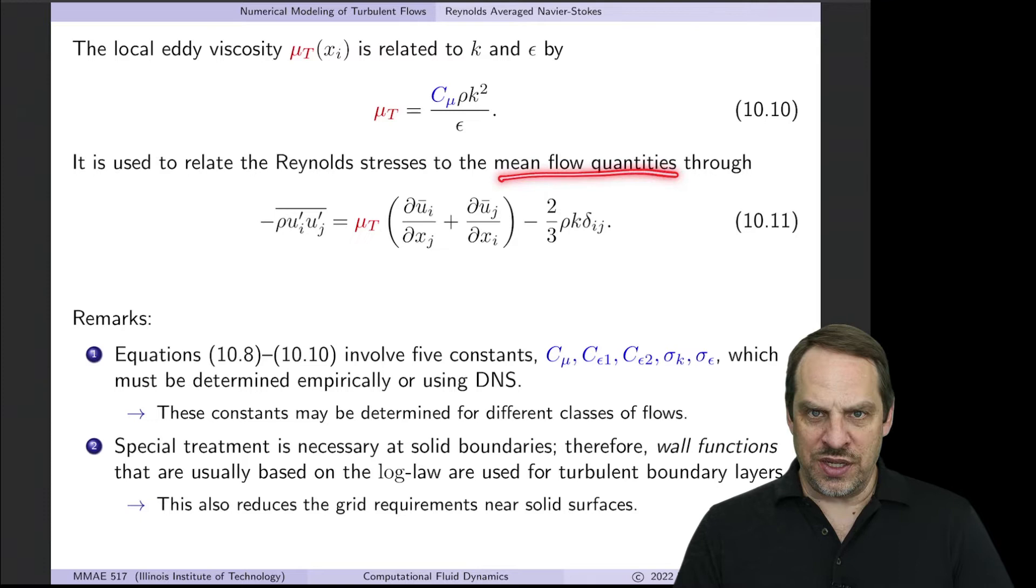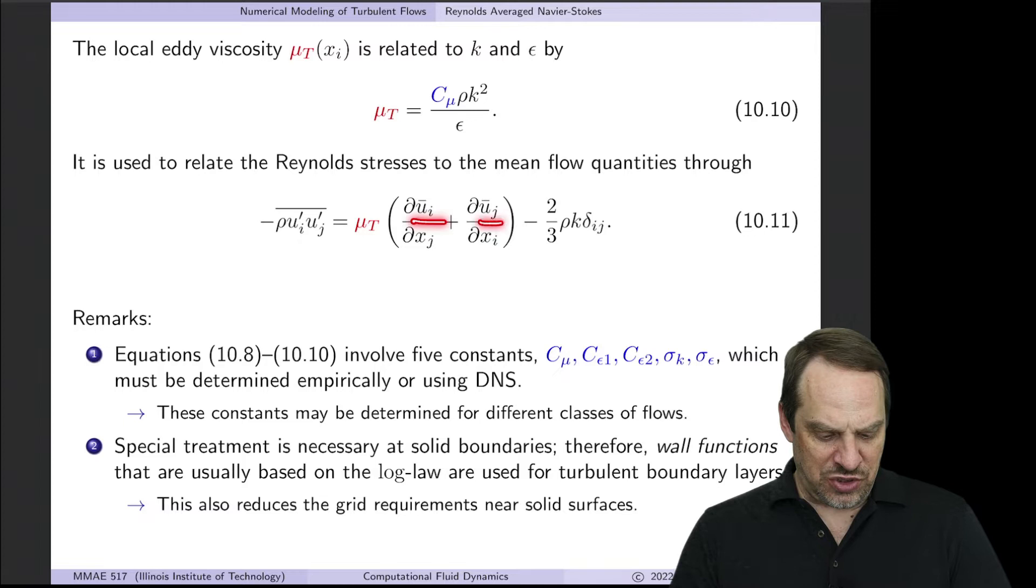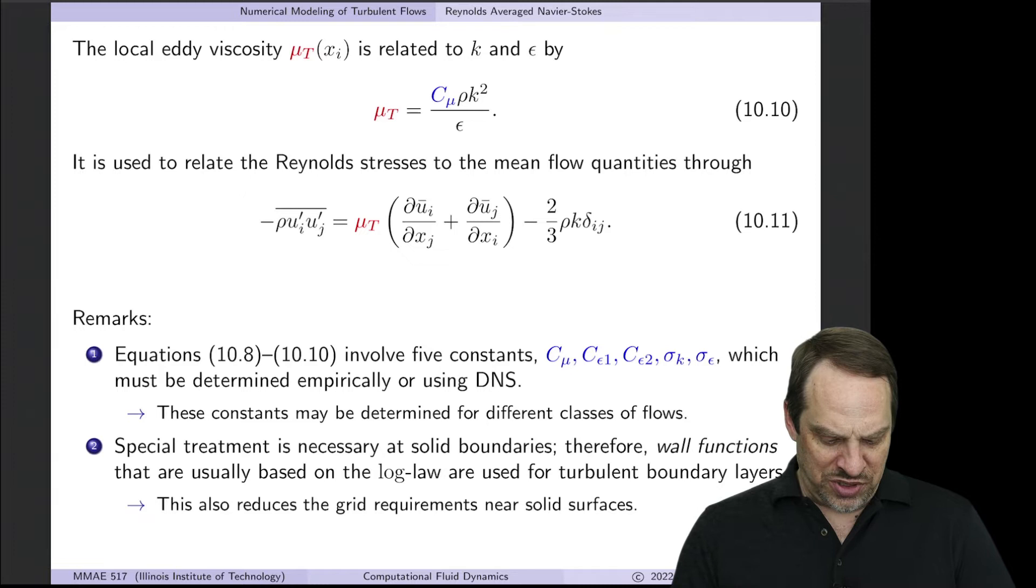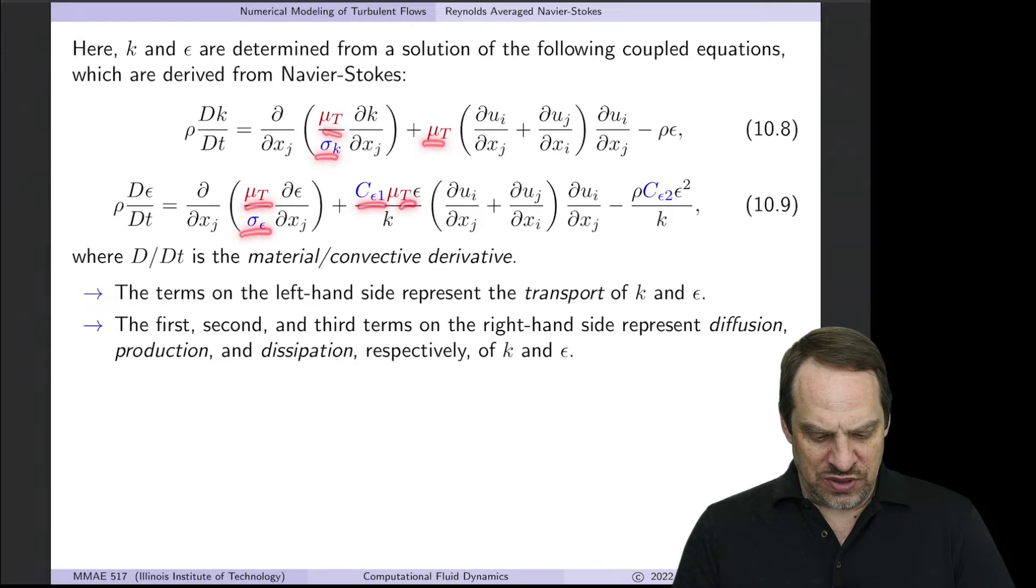Our Reynolds stresses are related to the mean flow quantities through this relationship. You see the u-primes here are being related to the u-primes on the right-hand side. What I want you to see are the five constants: c-mu, c-epsilon-1, c-epsilon-2, sigma-k, sigma-epsilon, that you'll see throughout all of these equations.